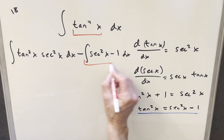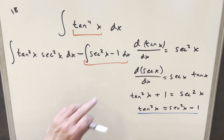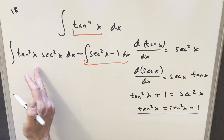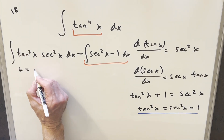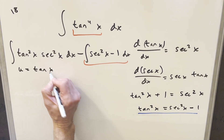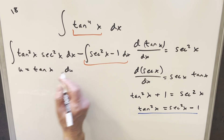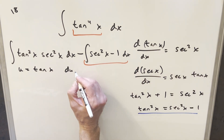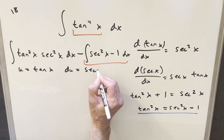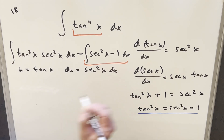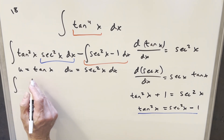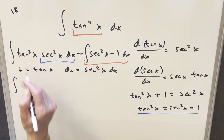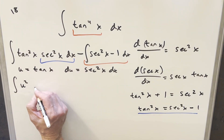For the first piece, I'll do a u-substitution. Let u equal tan x. Then du equals secant squared x dx, since we found the derivative of tan x is secant squared x. We have that du right here, so when we do this substitution, the first integral becomes the integral of u squared du.